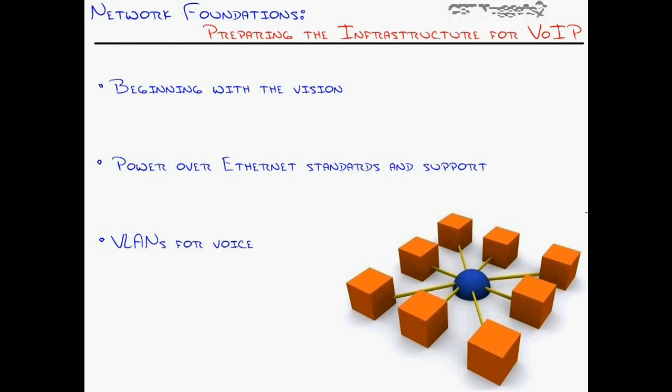So what I'd like to do is walk through two nuggets on network foundations, preparing the infrastructure for Voice over IP. I'm going to begin with a vision of what the network will look like — kind of begin with the end in mind, to pull out a Stephen Covey seven habits habit. We're going to look at where we're going and then look at the pieces one by one to get there. In this nugget, we'll walk through the Power over Ethernet standards and voice VLANs.